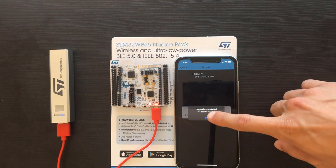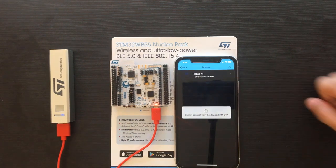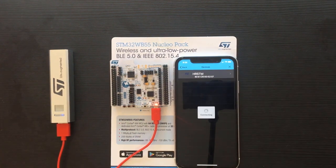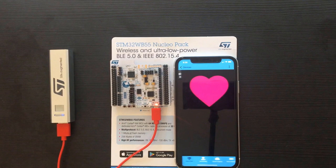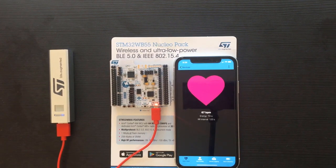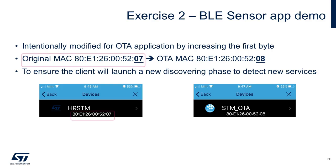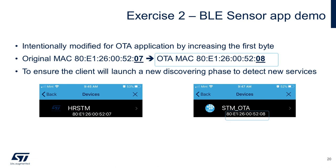Transferring the image is complete. The STM32WB now runs the heart rate OTA example. Let's connect this device. The OTA loader increments the MAC address so that the client is ensured to launch a new discovering phase to detect new services.